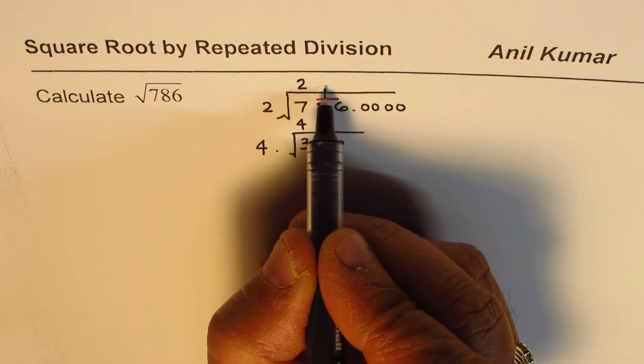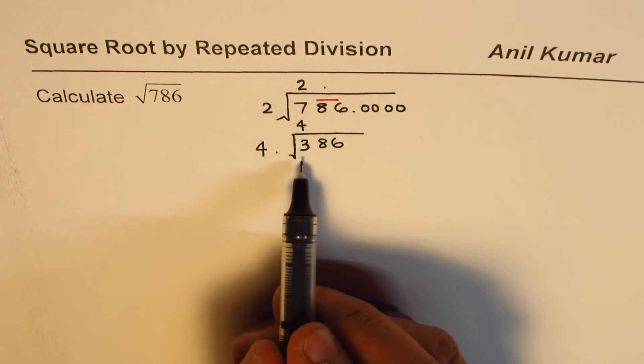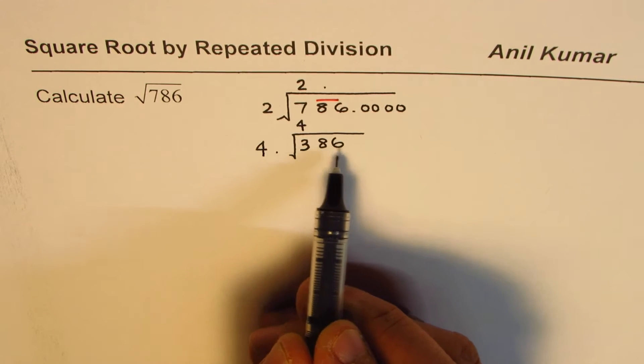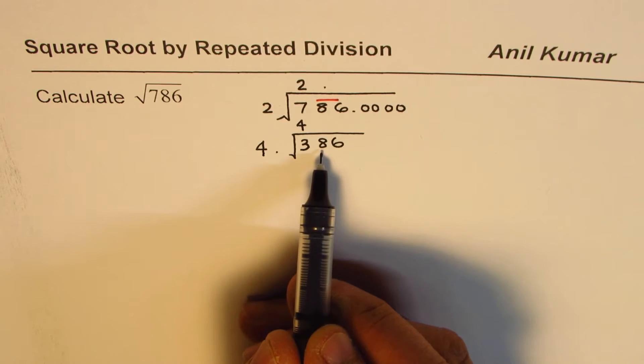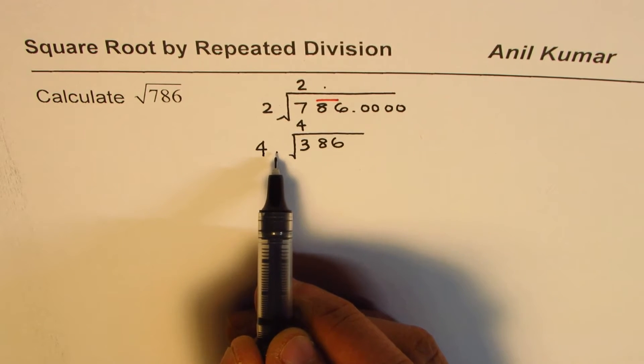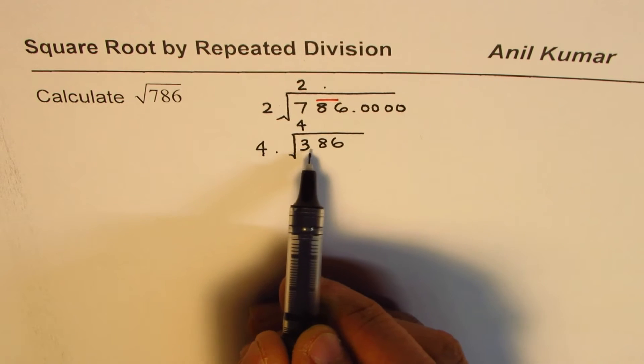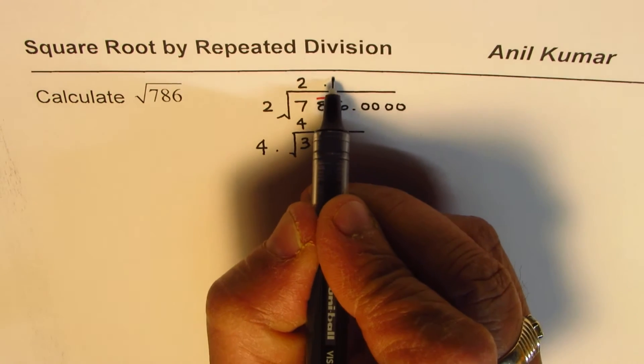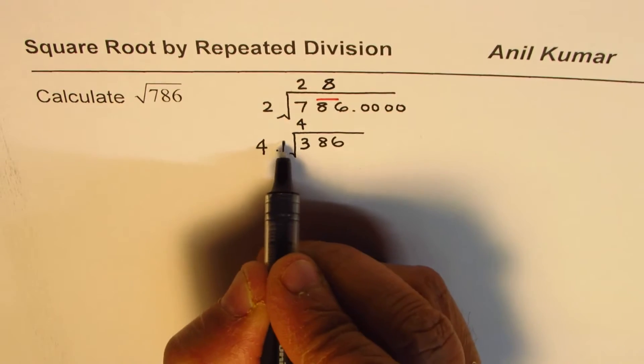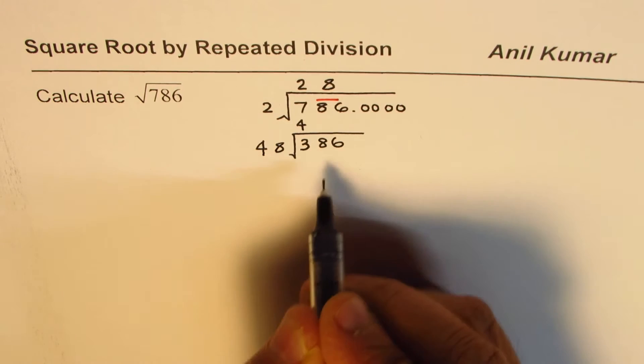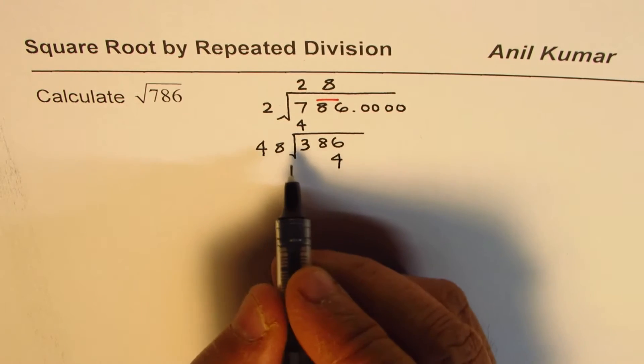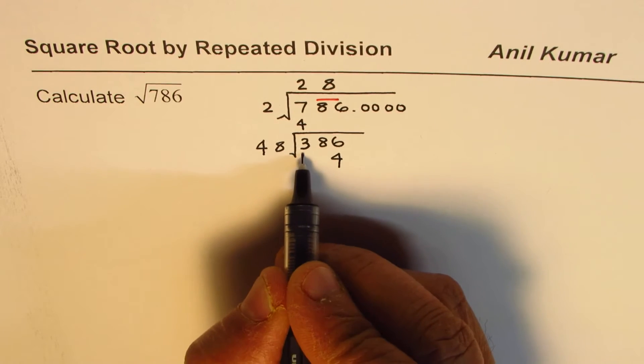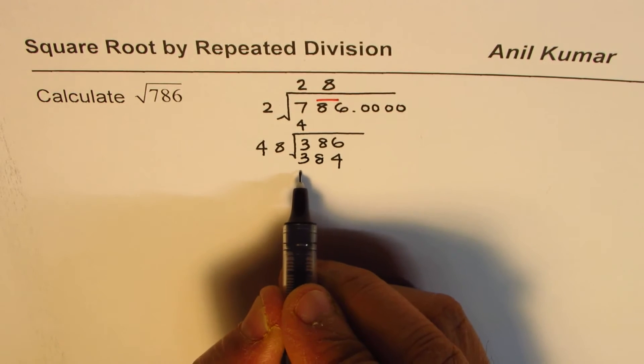4 times 8 is 32, we could try 8. 4 times 9 is 36, but 9 times 9 is 81, so that will be higher than 386. So we'll try 8. 8 is the number. When you multiply by 8: 8 times 8 is 64, so we get 4, 6. 8 times 4 is 32, 32 plus 6 is 38.